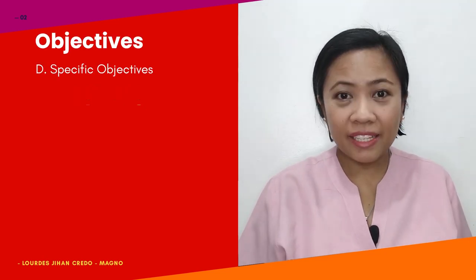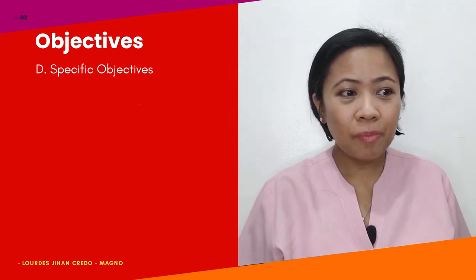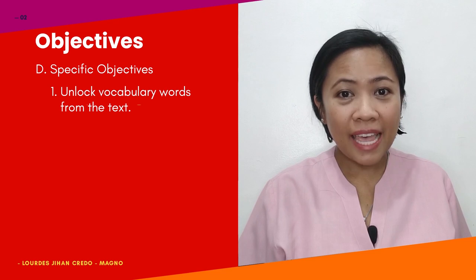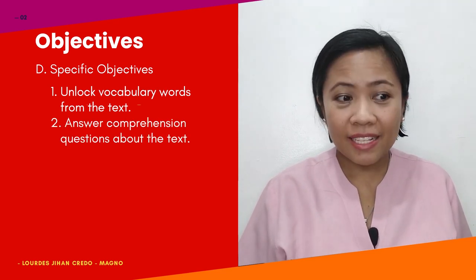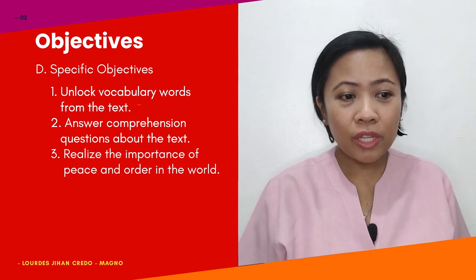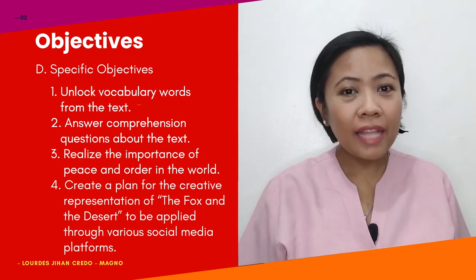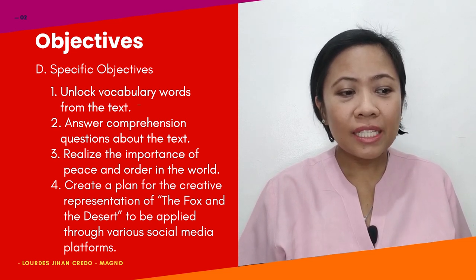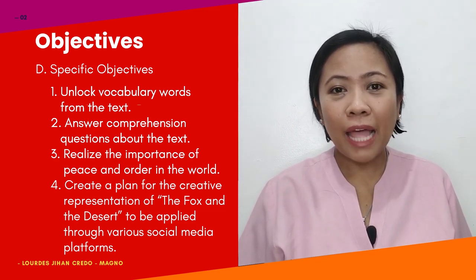For our specific objectives, at the end of this lesson, you are expected to: unlock vocabulary words from the text, answer comprehension questions about the text, realize the importance of peace and order in the world, and create a plan for the creative representation of The Fox and the Desert to be applied through various social media platforms.